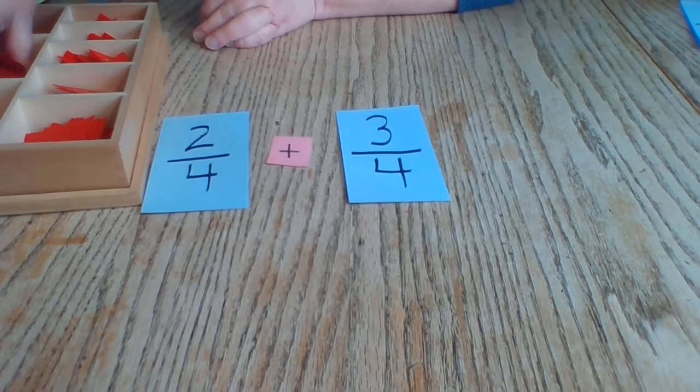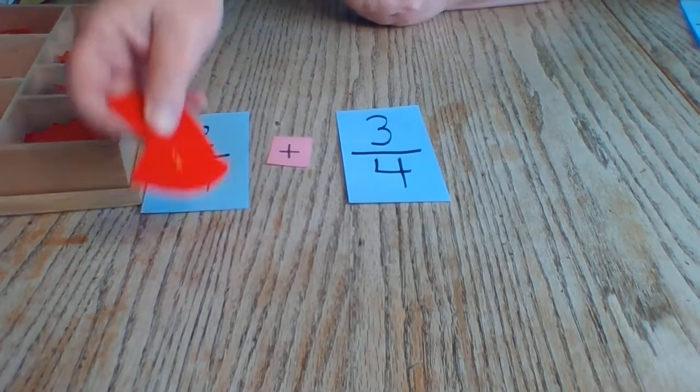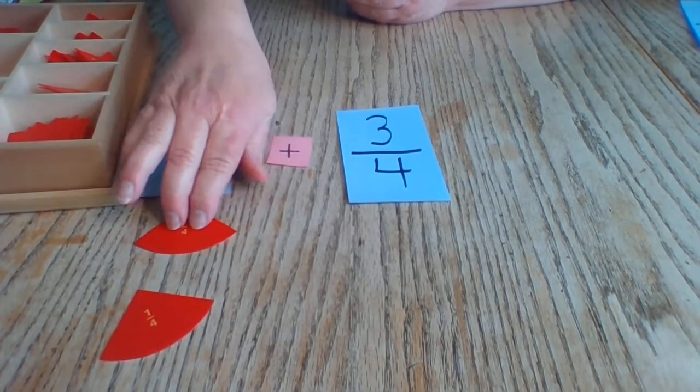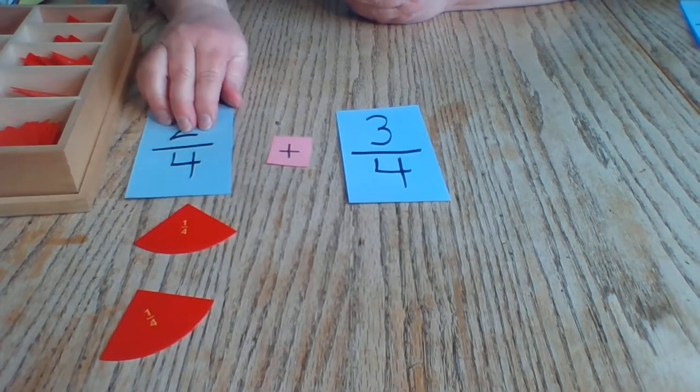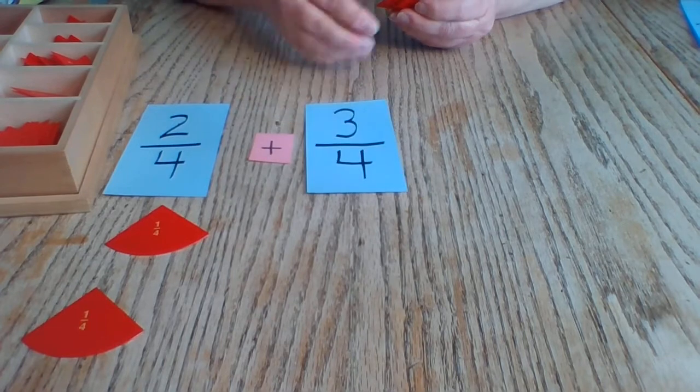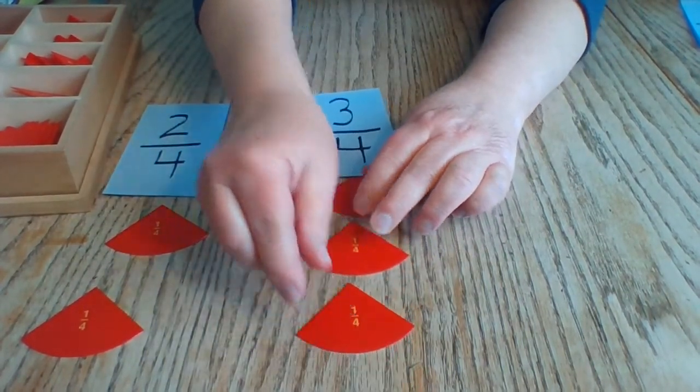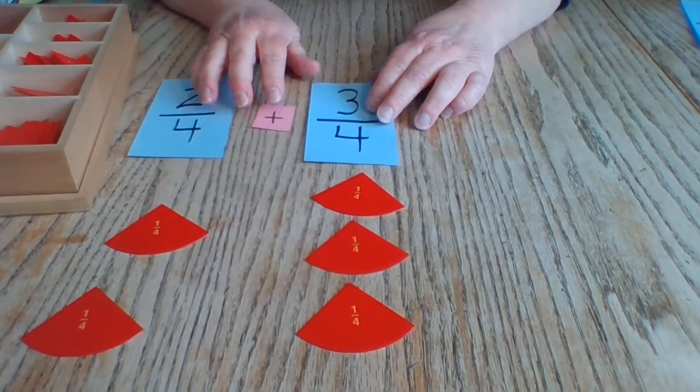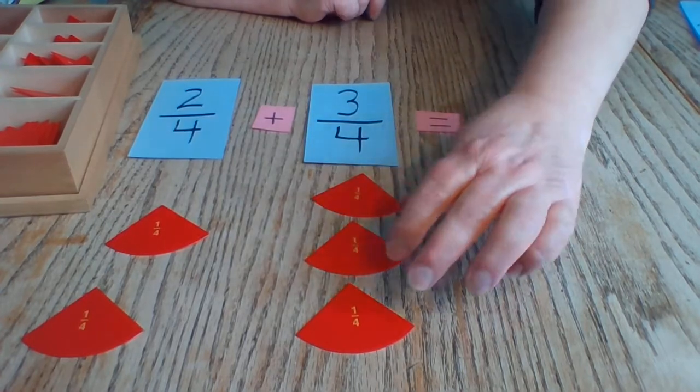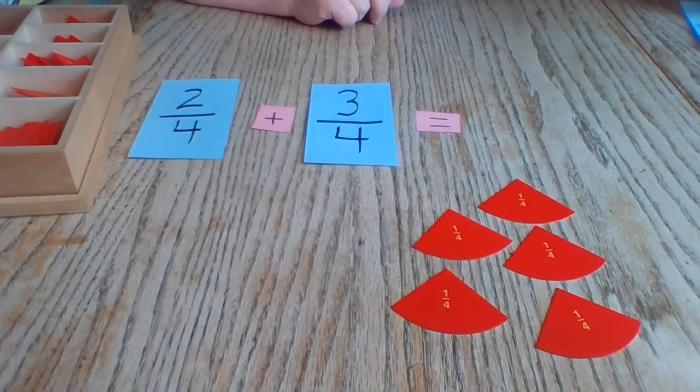Let's try this addition, fraction addition, two-fourths, plus three-fourths. One, two, three-fourths, and if we put them together, we get five-fourths.